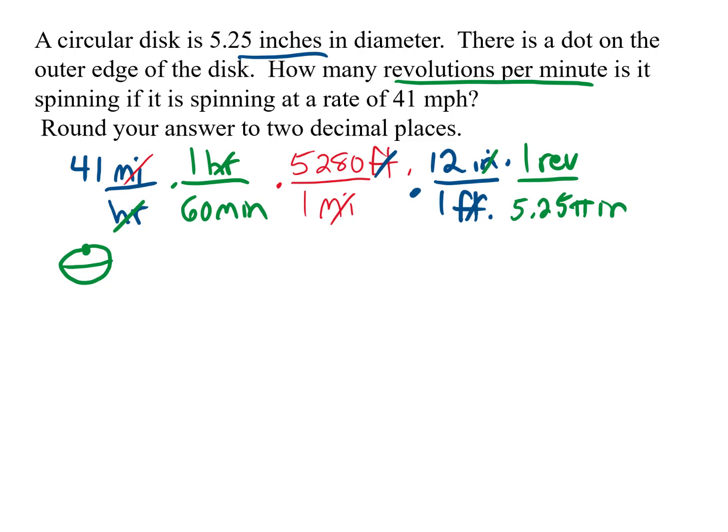And so the inches cancel and we have revolutions per minute, which is what we wanted. So now we can go ahead and put this in the calculator. So we're going to multiply all of the tops of the fractions. So we have 41 times 5,280 times 12 divided by, we're going to make a parenthesis because the bottom has more than one piece, we're going to put 60 times 5.25 times π, finish the parenthesis.